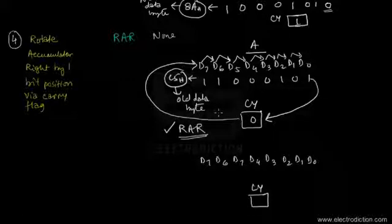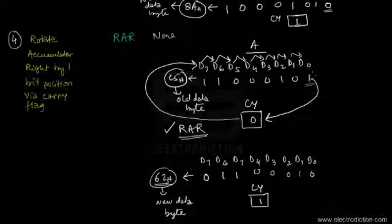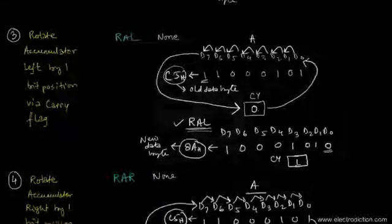With RAR, bit D0 gets transferred into the carry flag position, while the carry flag content gets transferred into bit D7's position. The new accumulator data byte expressed in hex is 62H. Since the bit at D0 was 1, it gets transferred to the carry flag, so the carry flag becomes set. The carry flag's content (logic 0) is transferred to D7's position, so bit D7 is now logic 0 — exactly the reverse of the RAL instruction.